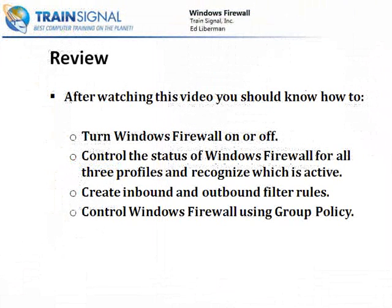That's pretty much it for Windows Firewall. After watching this video, you should now know how to turn Windows Firewall on or off — either in Control Panel or through Windows Firewall with Advanced Security. You should know how to control the status for all three profiles, not just the active one, and recognize which profile is currently active. You should know how to create inbound and outbound filter rules. And most importantly, you should know how to control Windows Firewall across all computers in your network using group policy. Go ahead and take a little break, get yourself something to drink, and I'll see you in the next video.